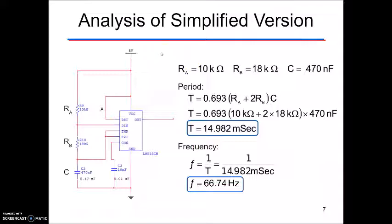So looking at the simplified version, up here we have calculation for our different resistors, our A, our B, and then our capacitors. Looking at our period, our calculation for period ends up being 14.982 microseconds and our frequency is 66.74 hertz is what it comes out at.